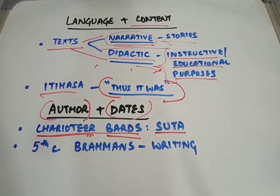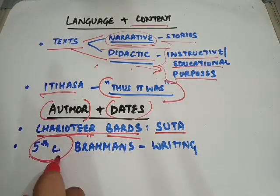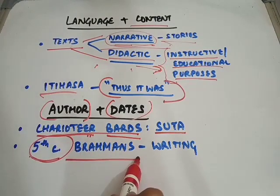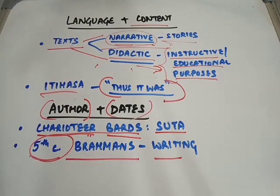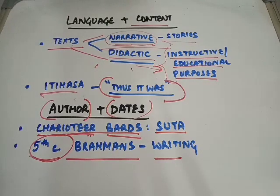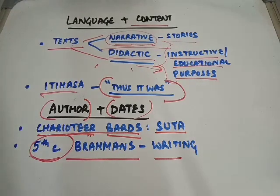These compositions originally circulated orally. However, by the 5th century BCE, Brahmans started writing these stories. With time and across regions, variations started appearing in the stories, which is a natural process. Therefore, we cannot say that what is written in the text is necessarily the truth.